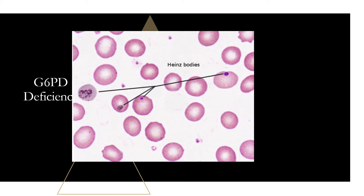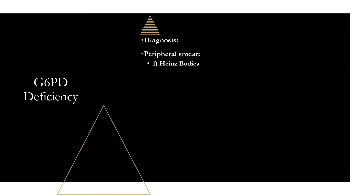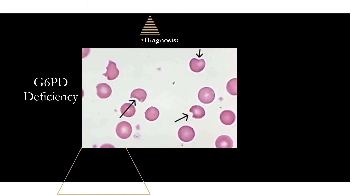Know this for exams — they may not say 'Heinz bodies' but will say 'denatured hemoglobin.' You'll also see bite cells on the peripheral smear, which are red blood cells with literally bites taken out of them. This is where the spleen removed the Heinz bodies. A memory trick: think of Heinz ketchup making the red blood cells more delicious, so the spleen wants to take a bite out.